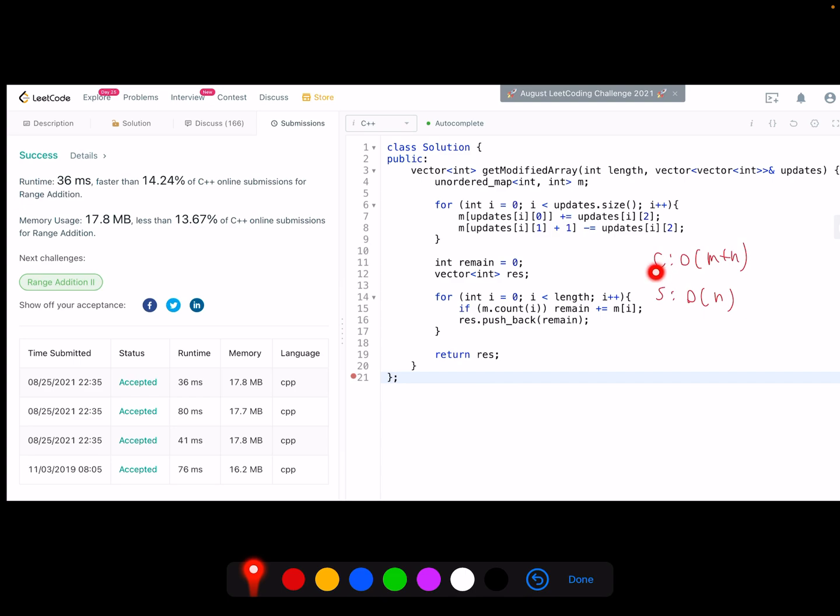So next, computation complexity. Here we have a for loop for the length of updates, so it's m. And then we have the next for loop, it's the length of the resulting array, which is n. So our final computation complexity is O(m + n). It's linear. Then the space, since we open a hash map to store the index to the value, the key can be as large as the length of the array, right? Because there are only n indices in the array. If there is a duplicate, we just directly update on that key. So the space is O(n).